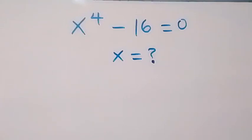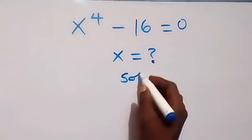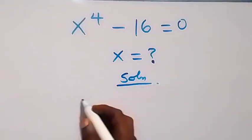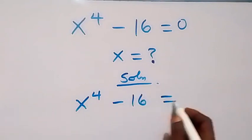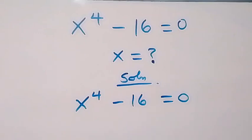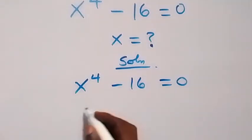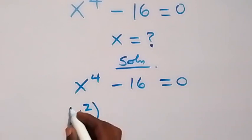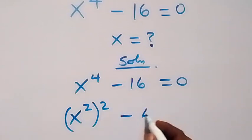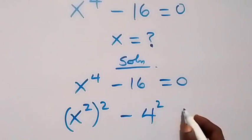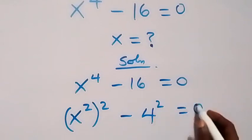Hello, you are welcome. How to solve this nice algebra equation: we have x raised to power 4 minus 16 equals zero. We can write this again as x squared, then also squared, minus 4 squared, and this equals zero.